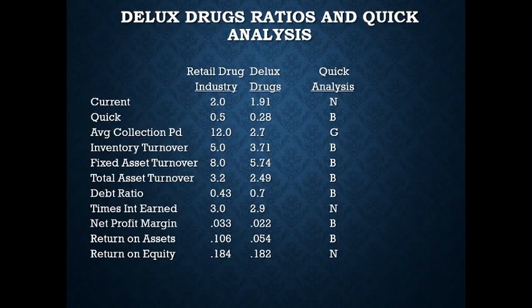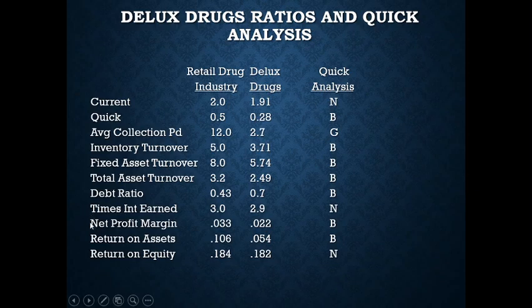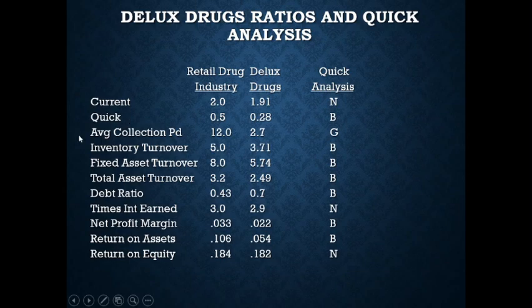Let's step back and look at these ratios. The current ratio and quick ratio are liquidity ratios. The average collection period, inventory turnover, fixed asset turnover, and total asset turnover are all asset management ratios. The debt ratio and times interest earned are debt management ratios. Net profit margin, ROA, and ROE are profitability ratios, and ROE does double duty as a shareholder return ratio as well. So we have two liquidity ratios, four asset management, two debt management, three profitability, and one shareholder return.